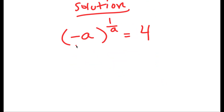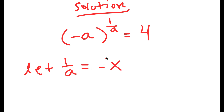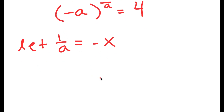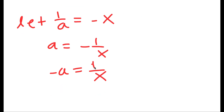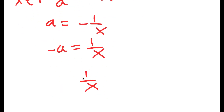Now I'm going to let 1 over a equal to negative x, meaning a is equal to negative 1 over x if I rearrange these variables, and negative a is equal to 1 over x. So this means that I have 1 over x to the power of negative x is equal to 4.